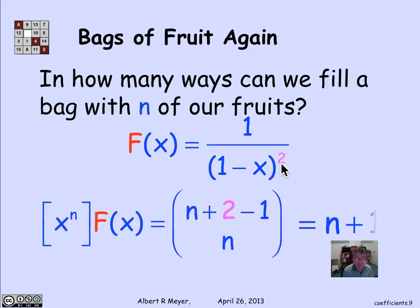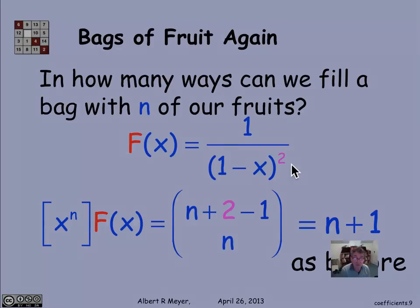And just checking our general formula against the case when k equals 2, sure enough, the coefficient of x to the n of F(x), the number of ways to select a bag of n fruits, is (n plus 2 minus 1) choose n, or n plus 1 ways, which we already saw in the earlier video using another method to find the coefficient of 1 over (1 minus x) squared.